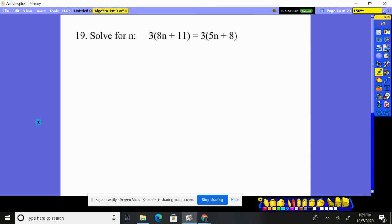Here, I need to distribute through. I get 24n plus 33, 15n plus, because 3 times 5n is 15n, and then 3 times 8 is 24.